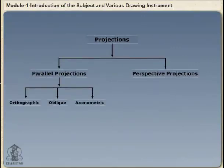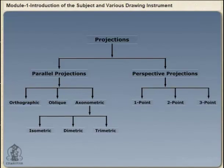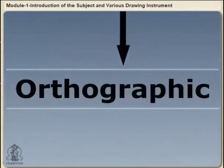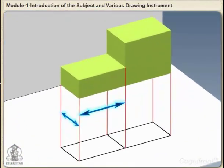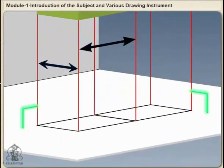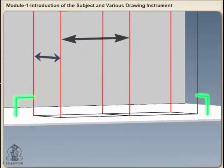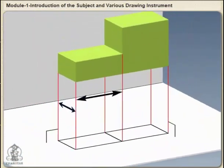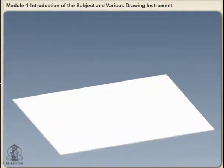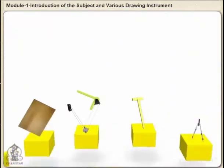Each of these in turn has further subtypes. We will focus on orthographic projections where the projectors are parallel to each other and they intersect the projection plane at right angles. We will study orthographic projection in detail later. So let's take a look at important tools used in engineering drawing.